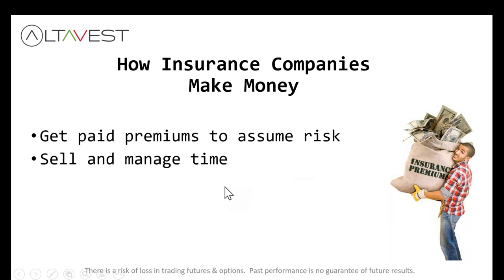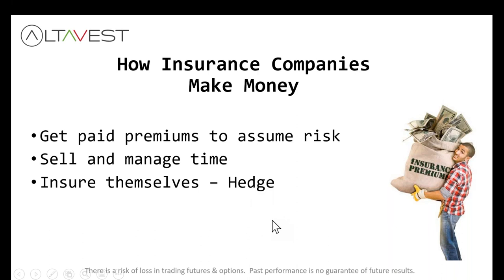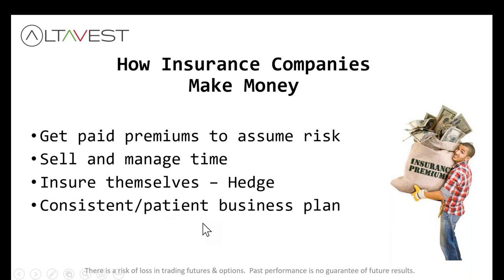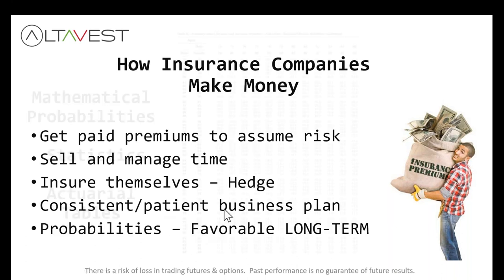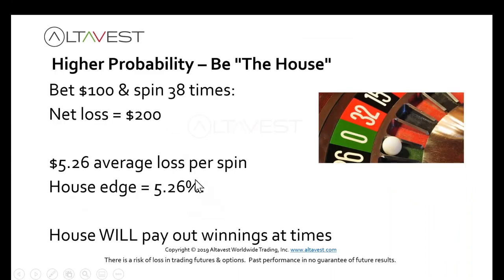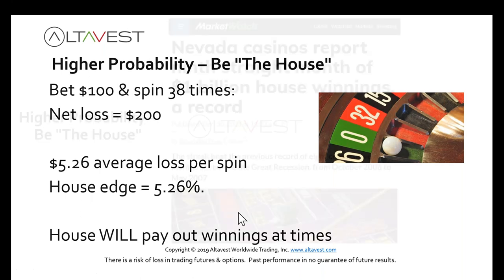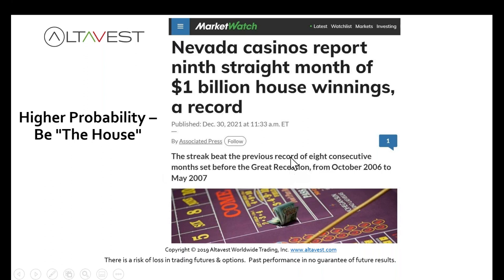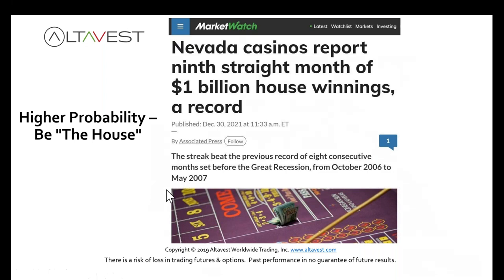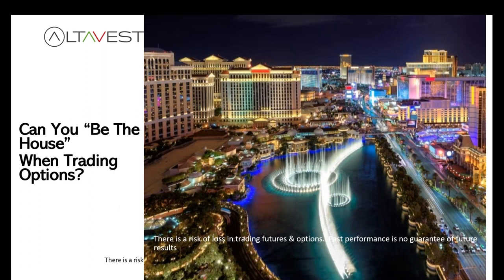You know how they make money: you pay them premiums and they assume risk. They're essentially selling and managing time, but they always hedge themselves. They're consistent and patient, and they look at math, probabilities, statistics, actuarials, number crunching — it's all quantitative, just like a casino. All those games are biased in their favor. You bet on that roulette wheel enough times, you're going to lose $5.26 on average — that's just the math. Nevada casinos reported their ninth straight month of $1 billion in house winnings, a record. Can we model ourselves after an insurance company or casino using math and quantitative data? How can you be the house when trading options?